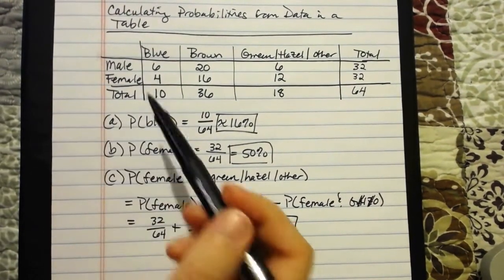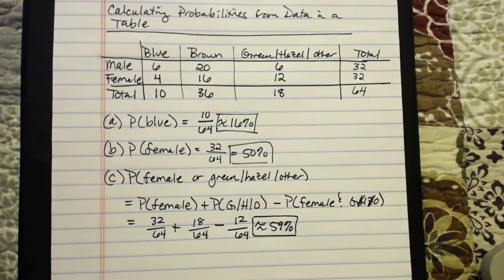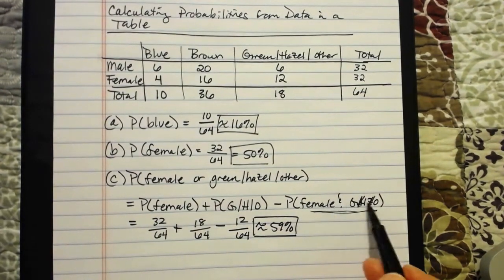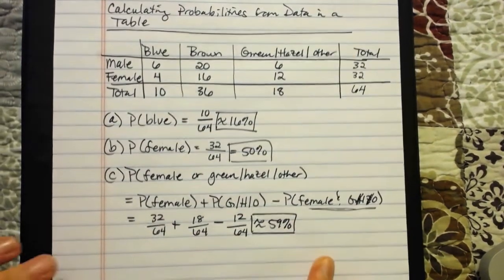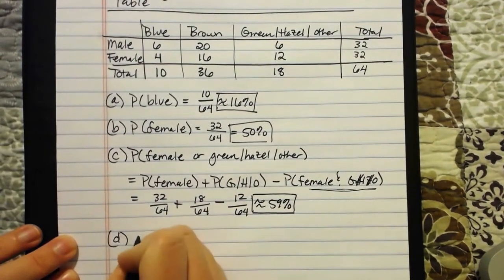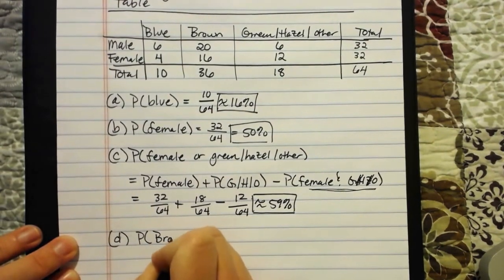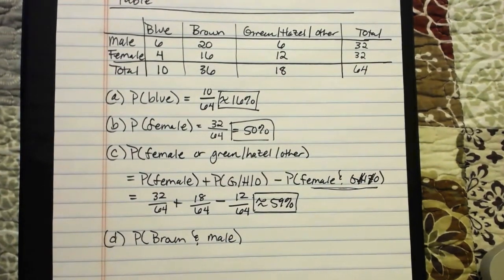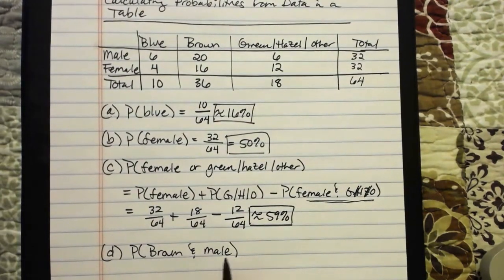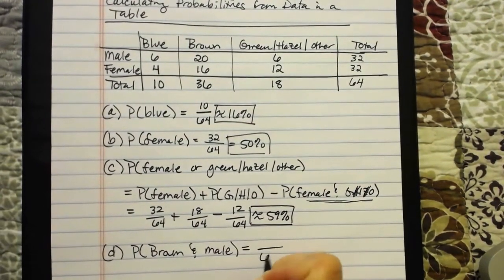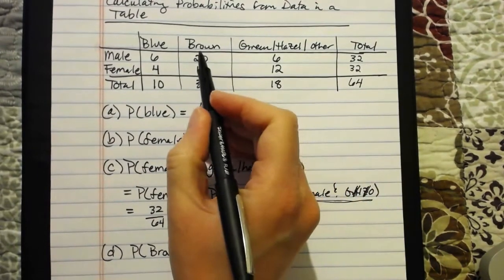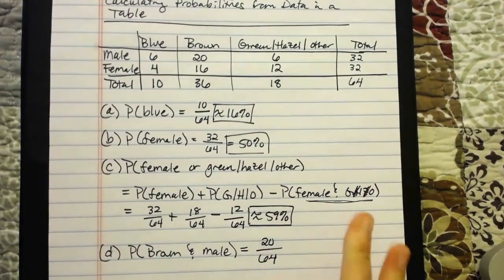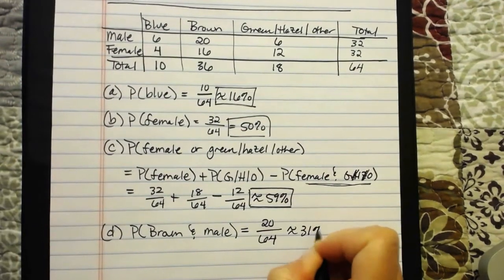These are all rules we've covered so far — basic probability, probability of an OR statement. Probability of an AND statement we hadn't gotten to explicitly yet, but when you have data in a table it's pretty easy to look up the probability of that AND statement. Part D: the probability of randomly selecting someone who has brown eyes and is male. From the table, we have 64 individuals, and 20 of them are simultaneously male and have brown eyes. So 20 out of 64, or about 31%.